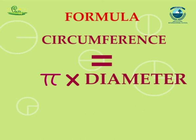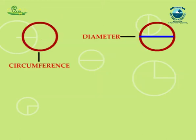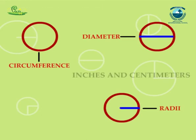Circumference, diameter, and radii are measured in linear units such as inches and centimeters.